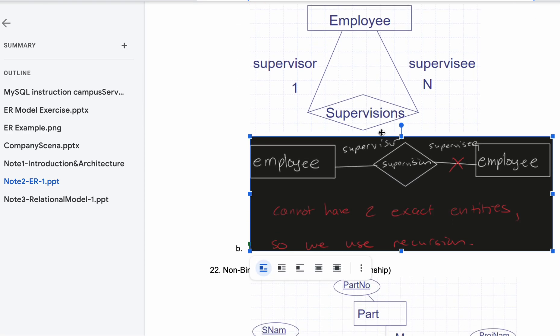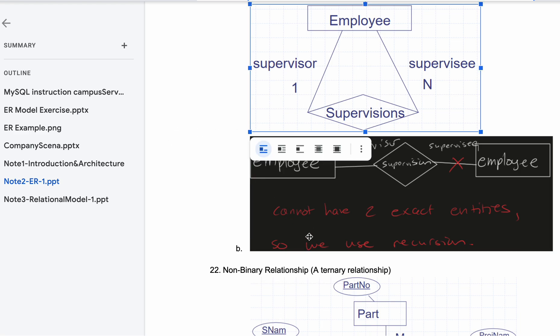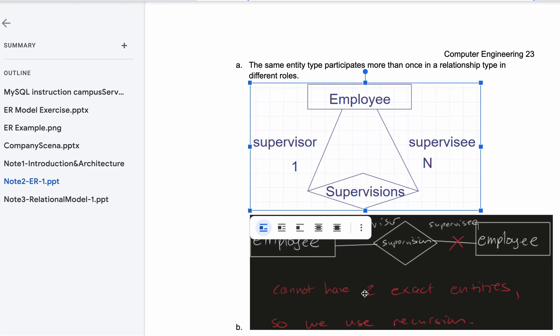Next we are going to look at a non-binary relationship, a ternary relationship, and then we're going to combine everything that we've learned so far together and close off this section.